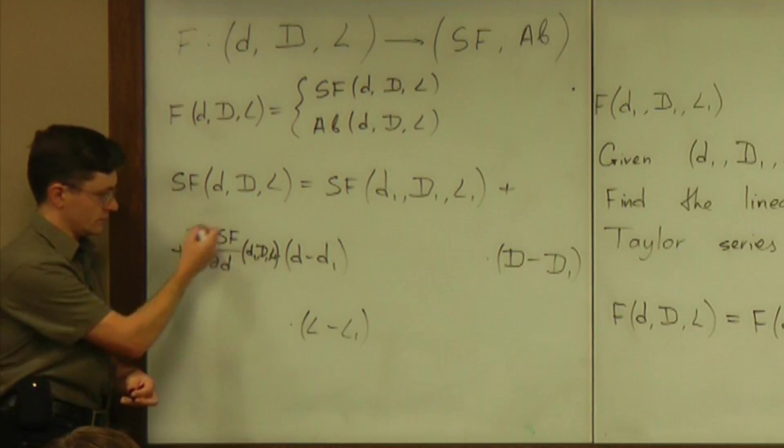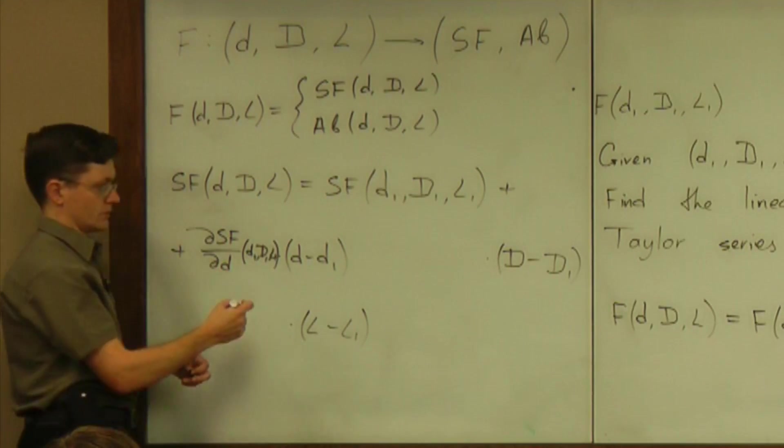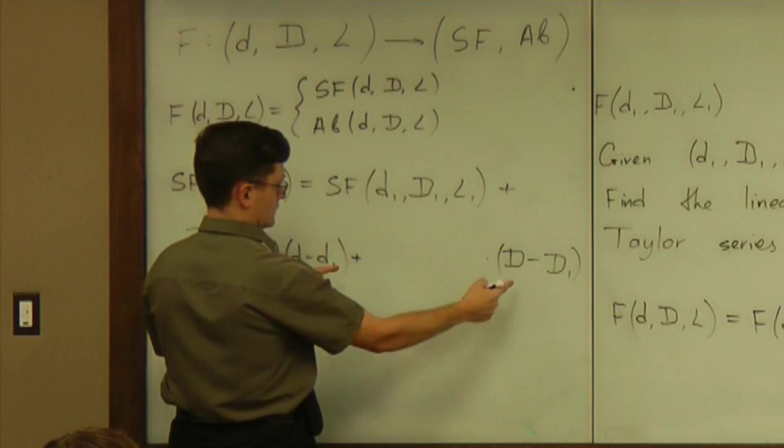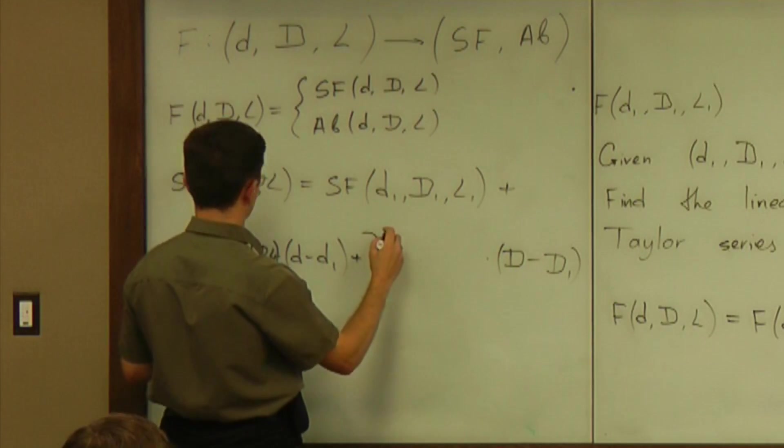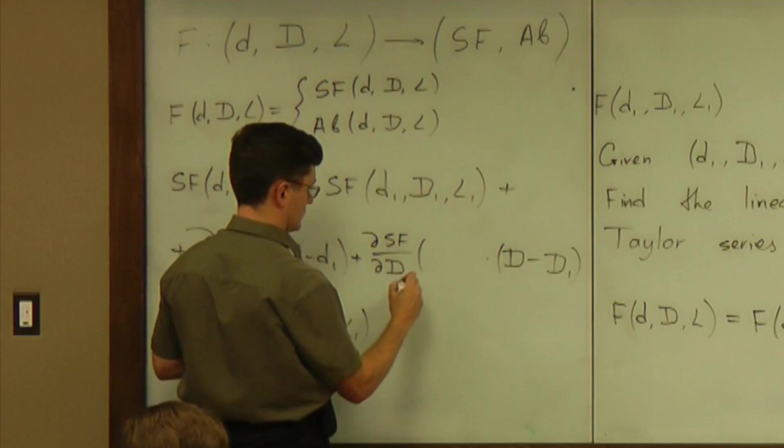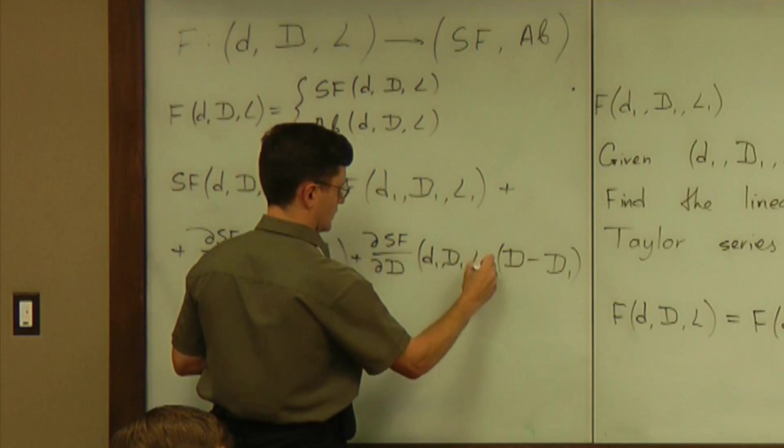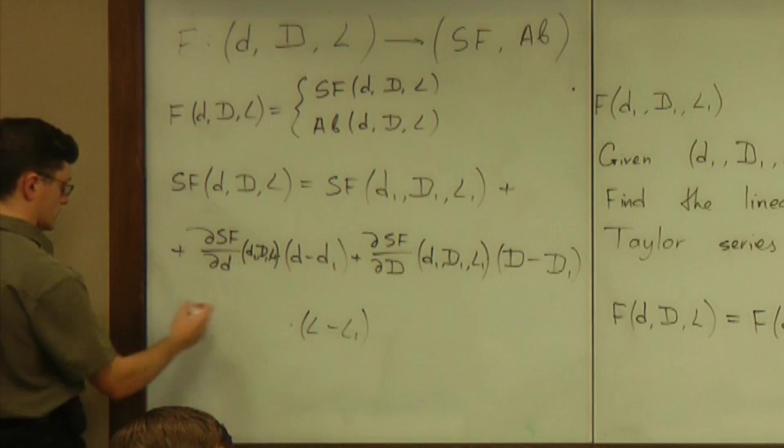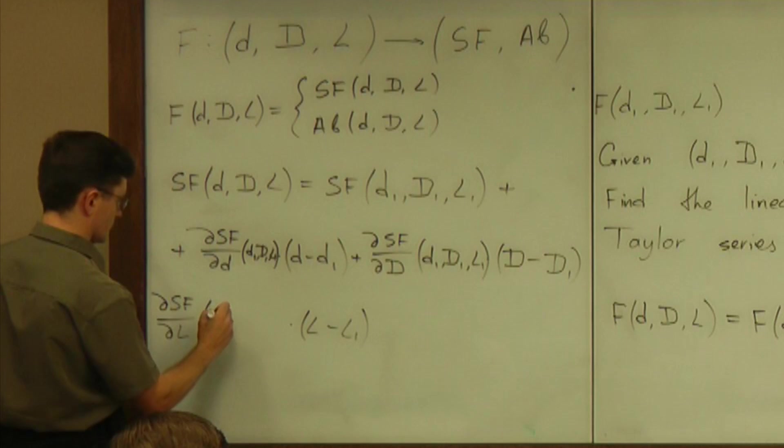So that's exactly the number that can be used in this Taylor approximation. And then the coefficient with this capital D term is, again, partial derivative of safety factor with respect to capital D evaluated at D1, capital D1, L1. And also here, partial of respect to L at the same point.